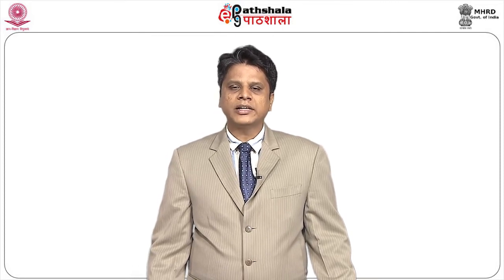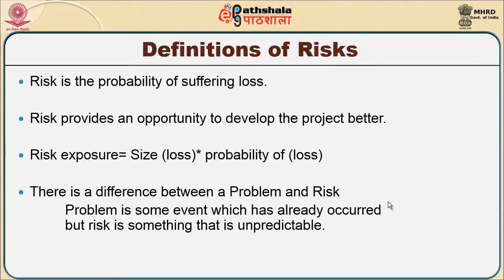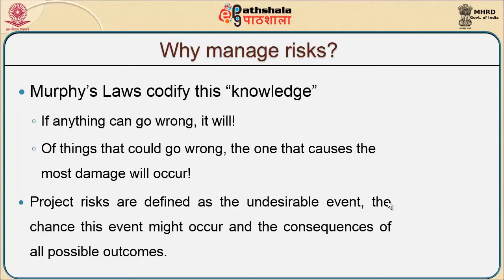There is certainly a difference between a problem and a risk. A problem is an event which has already occurred — something that happened in prior scenarios, we call it a problem. Whereas a risk is something unpredictable. There are various forms of risk that will be associated, and we will try understanding every phase after another.